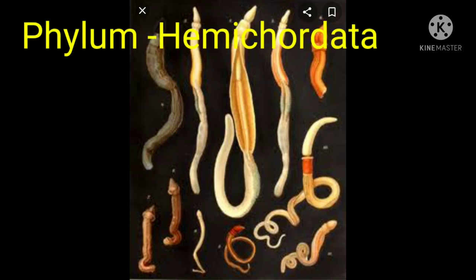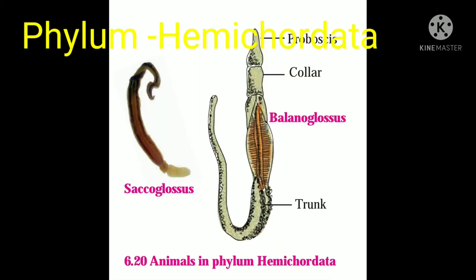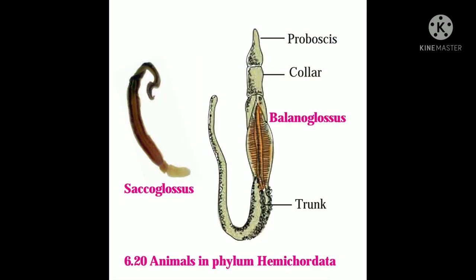Phylum Hemichordata, Kingdom Animalia. We learn here the characteristics of Phylum Hemichordata. The first characteristic: the body of these animals is divided into three parts — proboscis, collar, and trunk. Look at the picture here.